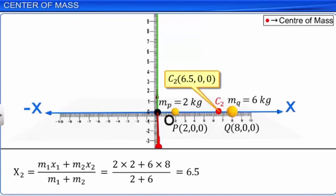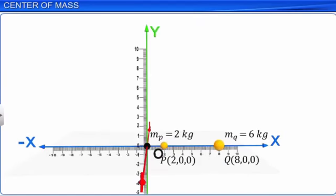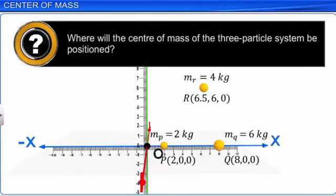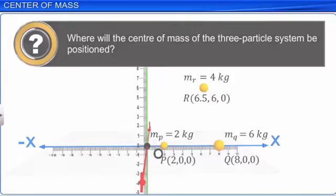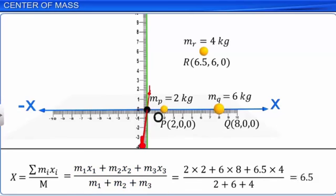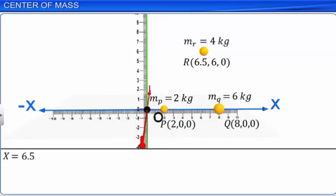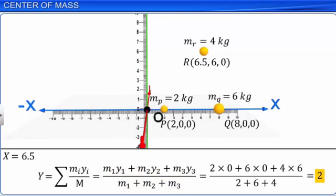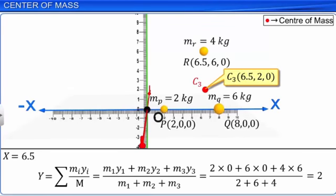If we place one more particle of mass 4 kg at point R(6.5, 6, 0), where will the center of mass of the 3-particle system be positioned? The given set of particles are on the XY plane, and hence the center of mass also lies on the XY plane. On simplification, we get X equals 6.5 and Y equals 2. The position of the center of mass is C3(6.5, 2, 0).